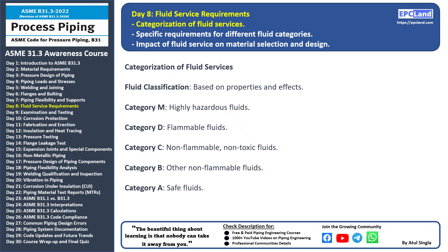Category D: flammable fluids fall under this category. These substances can ignite easily and need careful consideration to prevent fire hazards. Category C: non-flammable and non-toxic fluids are placed in this category — they pose minimal risk to the piping system and the environment. Category B includes other non-flammable fluids that might not fit in Category C; these fluids have low risk factors.